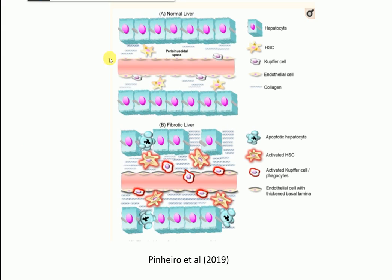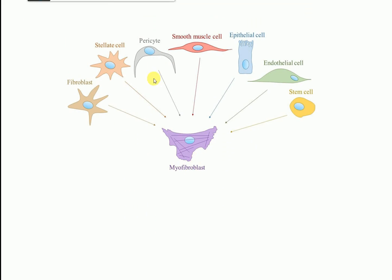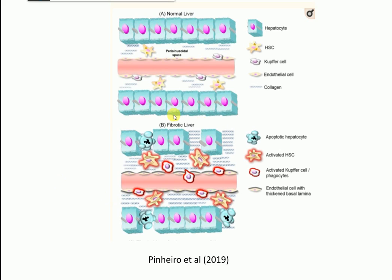Regarding myofibroblasts: they can originate from fibroblasts, stellate cells, and other cell types, and they are responsible for increasing extracellular matrix accumulation. In summary: fibrosis is a reversible state - up to fibrosis it can be reversed back to normal, but cirrhosis is a non-reversible condition. In a normal liver, there are healthy hepatocytes, less collagen accumulation, hepatic stellate cells in quiescent form, and endothelial cells with no thickening. In fibrotic conditions, hepatocytes are apoptotic, macrophages get activated, collagen and ECM accumulation increases, and endothelial cells develop thickened basal lamina.